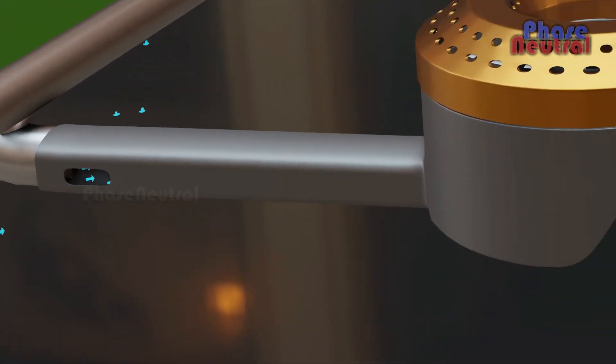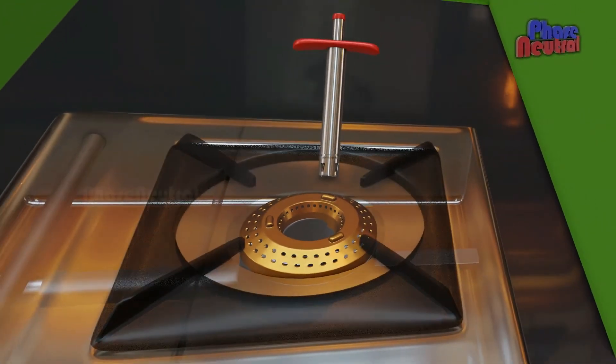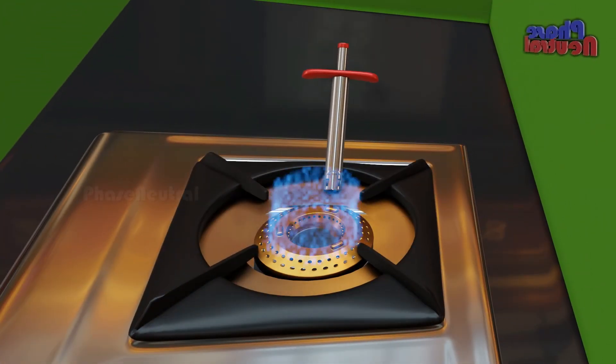This oxygen-gas mixture reaches the burner top and flows out through the burner holes. When you ignite this gas, you can get a blue flame with high temperature.